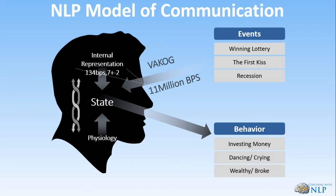When we take those three things together, we then have an external behavior. After a first kiss, the behavior might be dancing in the rain because you're so happy, or crying because it was a mistake. During a recession, why do some people become wealthy while others go broke? If I can change the internal representation, the state, or the physiology, then I can change the external behavior — and that's a wonderful thing to bear in mind.